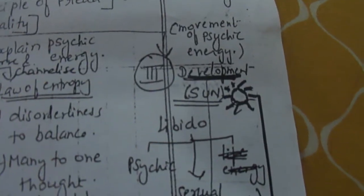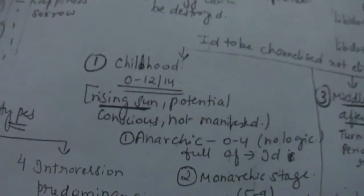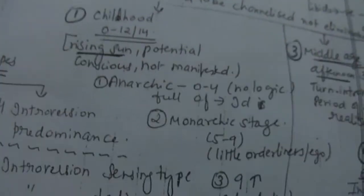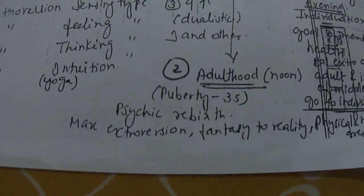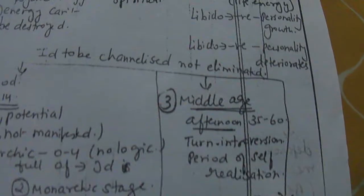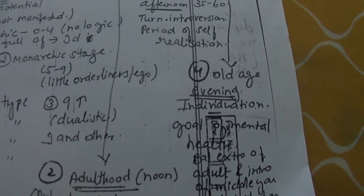And the third, the development was compared to the sun. Under that we saw the childhood: anarchic, monarchic, and dualistic. Then we saw the adulthood, then we saw the middle age, and then we saw the last one is individuation.